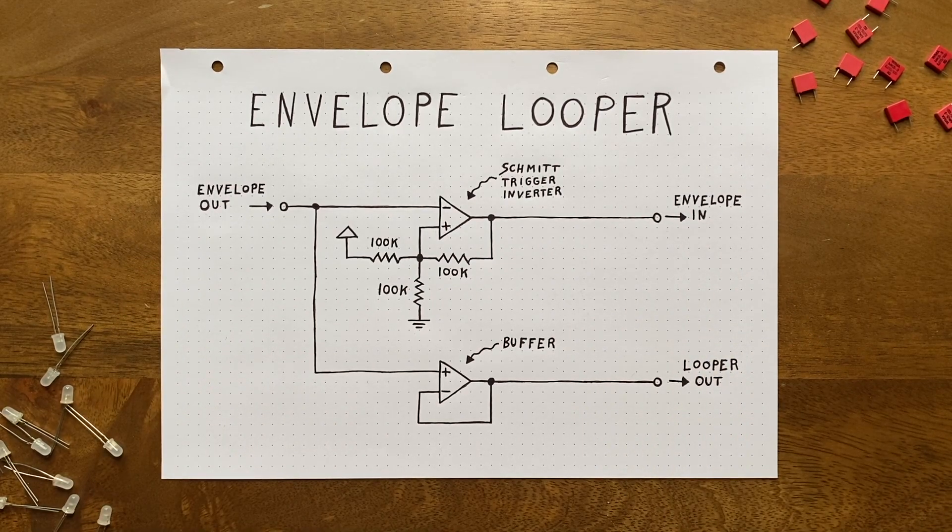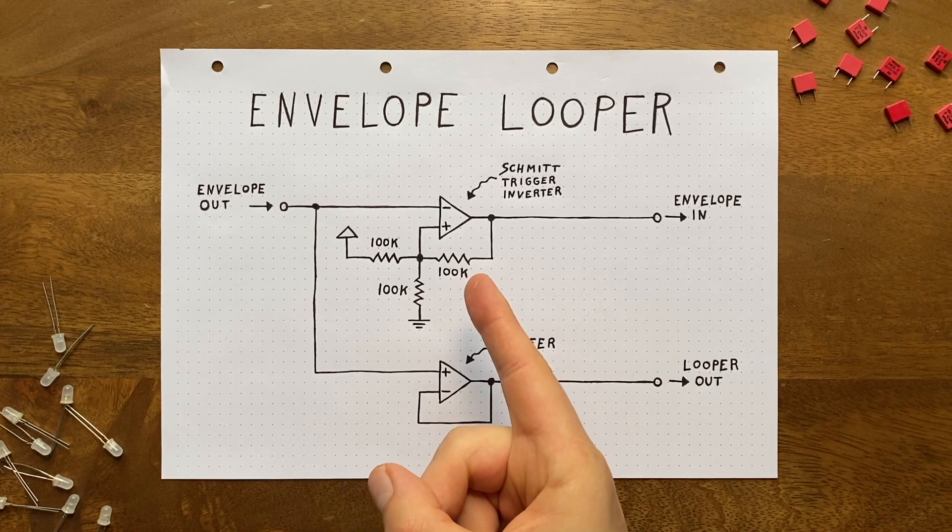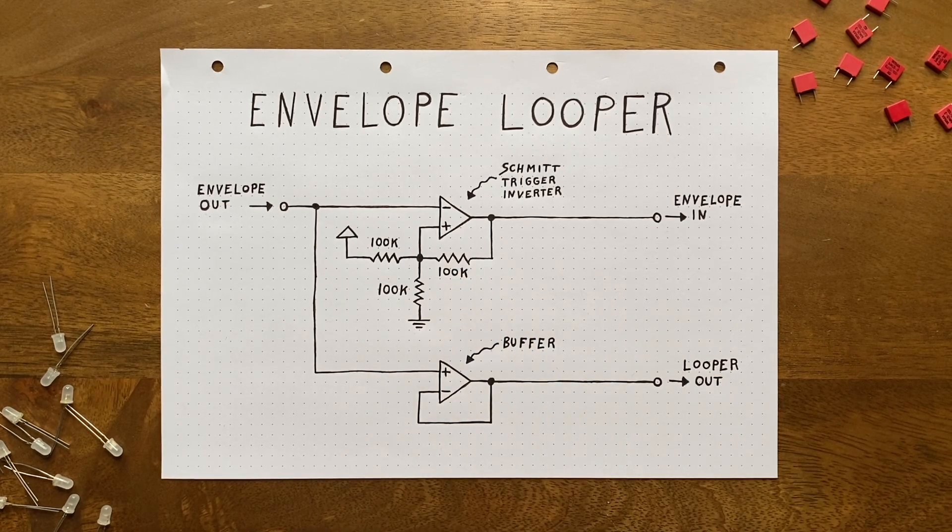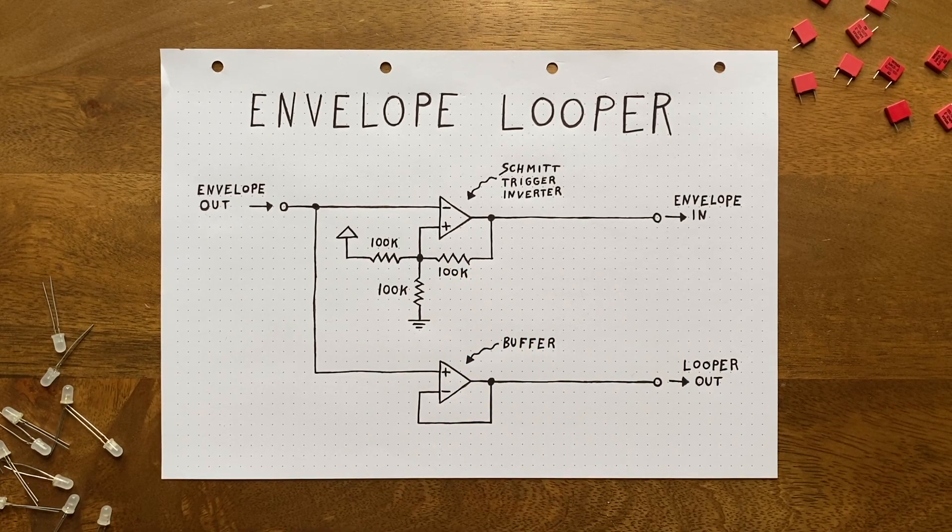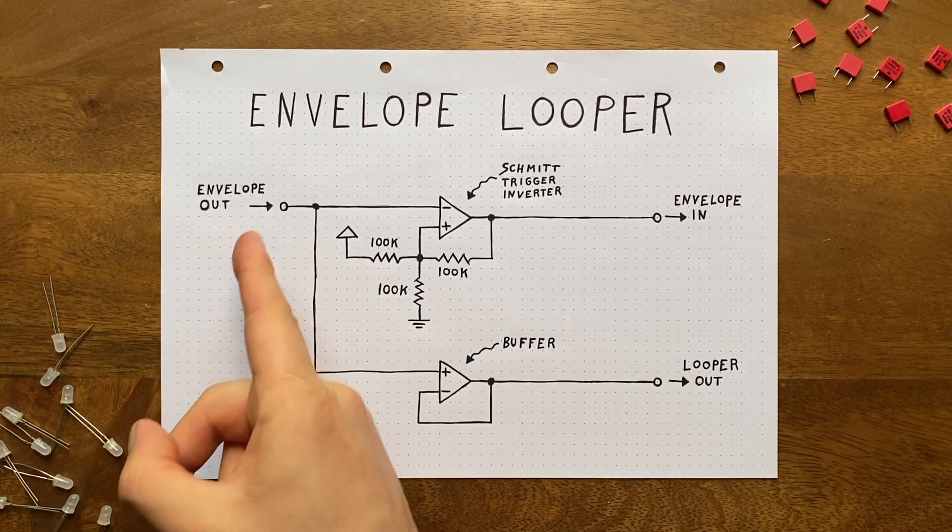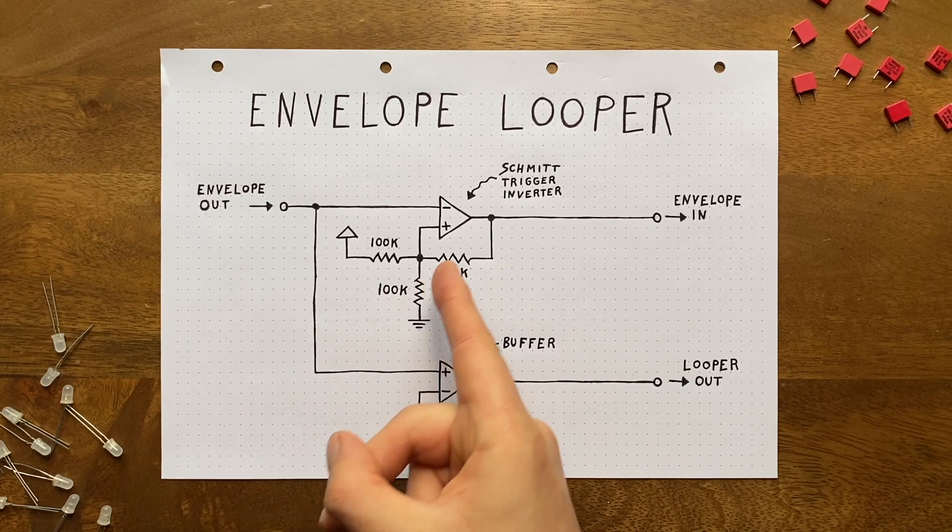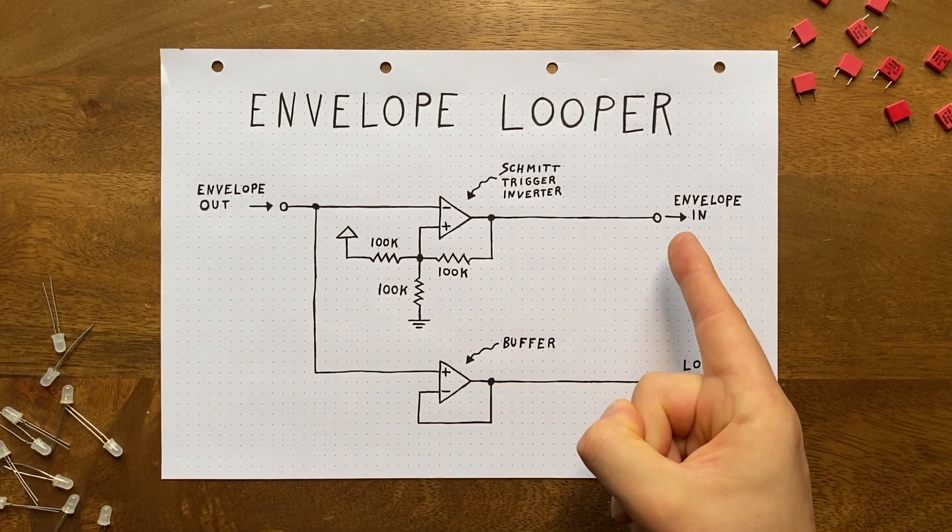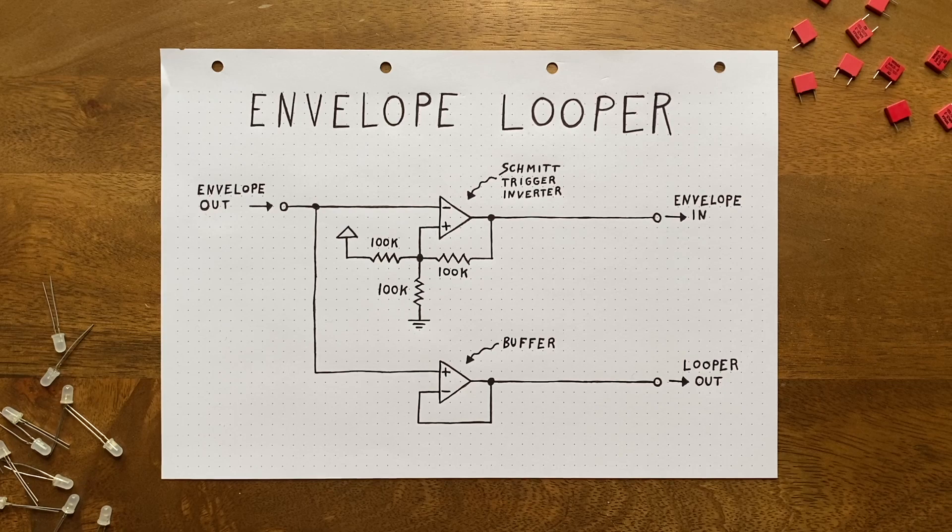To make that happen, we configure this op amp as a Schmidt trigger inverter. You can think of this like a watchdog that constantly monitors the envelope's output voltage. Whenever that output drops to zero volts, our watchdog will re-trigger the envelope and then sit back and wait until it's time to strike again.